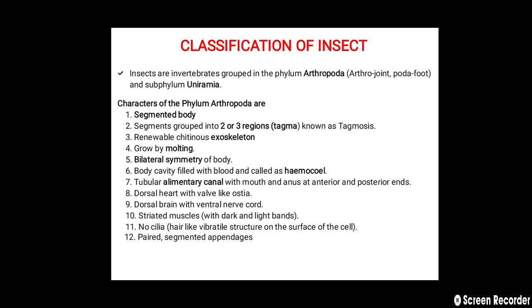The body of an insect is divided into mainly three regions: first is the head, second is the thorax, and third is the abdomen. On the thorax there are two pairs of wings on the mesothorax and metathorax respectively, and three pairs of legs.